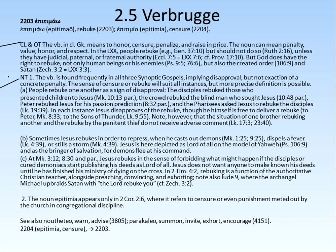In the Old Testament, you notice that it means to honor, censorize, penalize, or raise and praise — this picks up almost directly from Thayer's work. It can also mean penalty, honor, and respect. Then it goes to the Septuagint. In the Septuagint, people rebuke — notice we're using Genesis 37:10 — but should not do so unless they have judicial, paternal, or fraternal authority. Look at Ecclesiasticus 7:3 or Proverbs. God does have the right to rebuke not only humans but the created order and Satan.